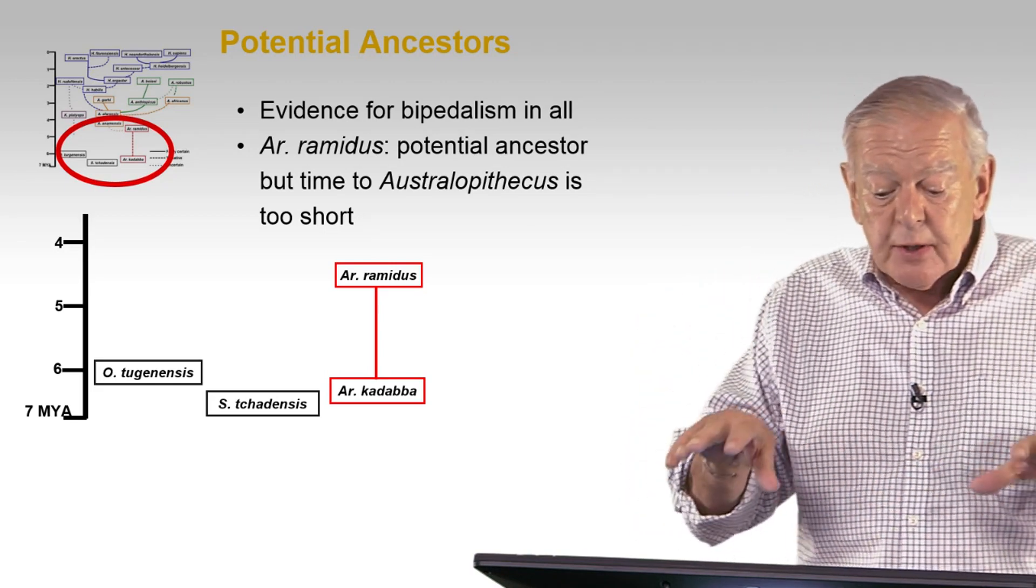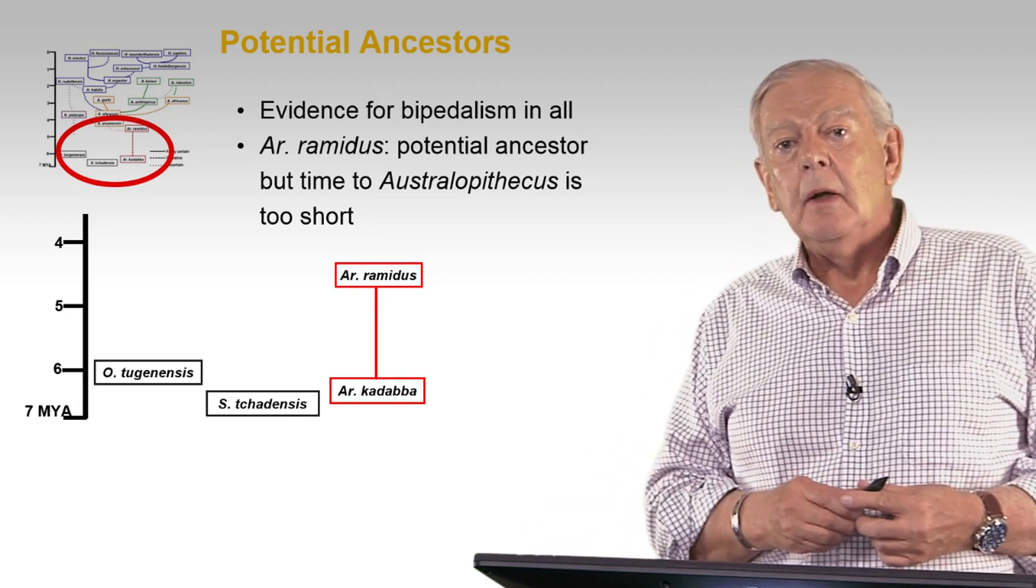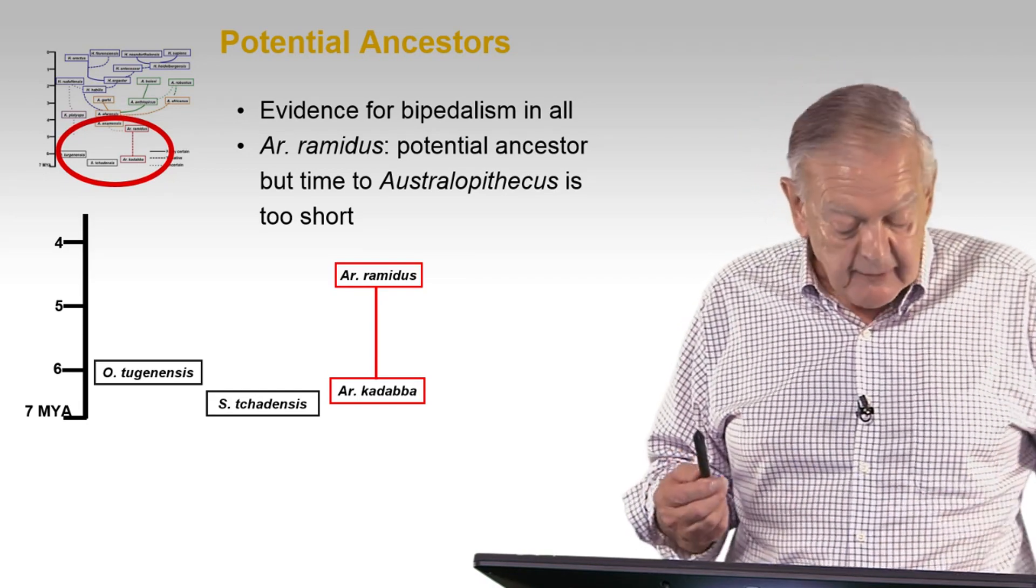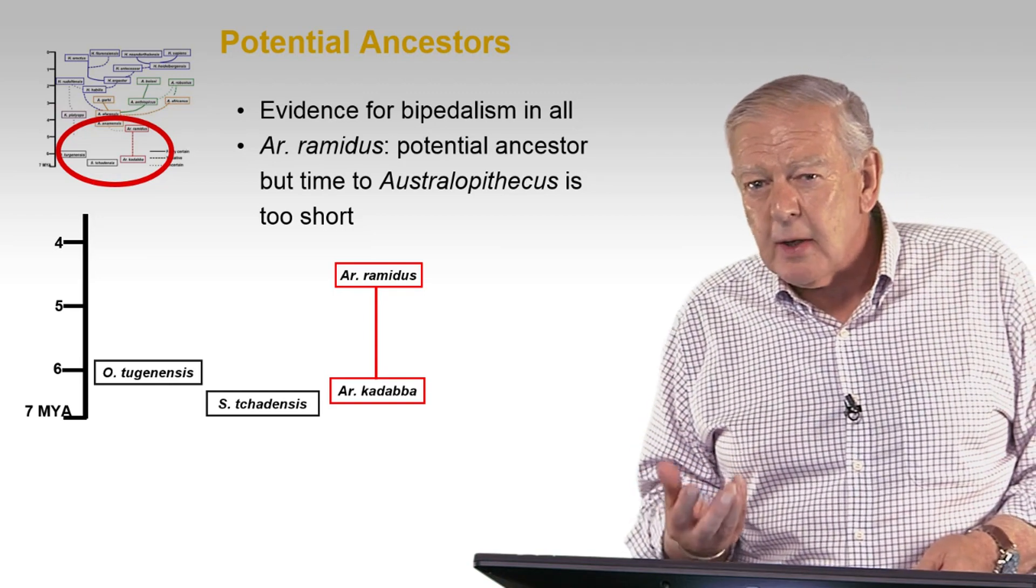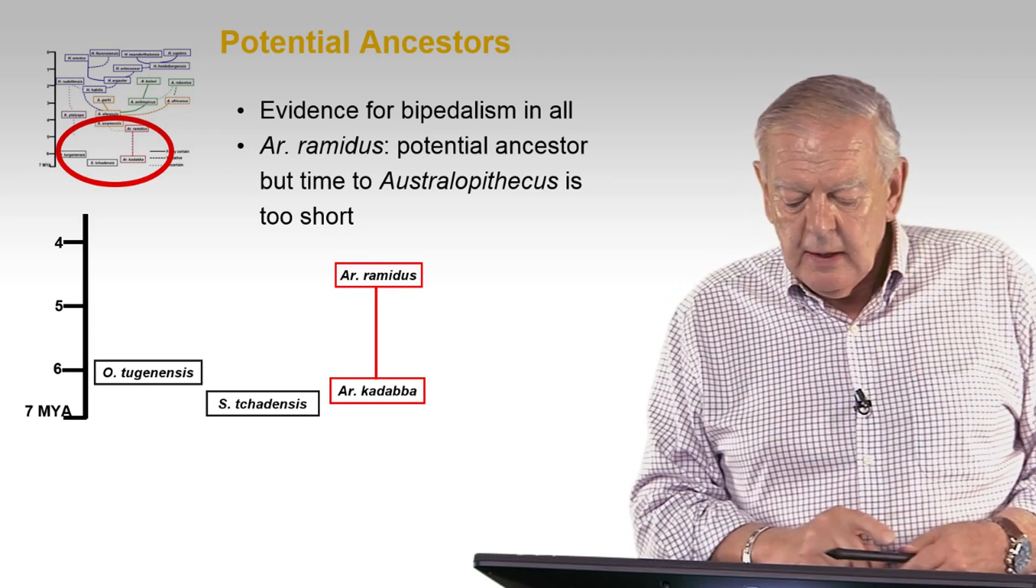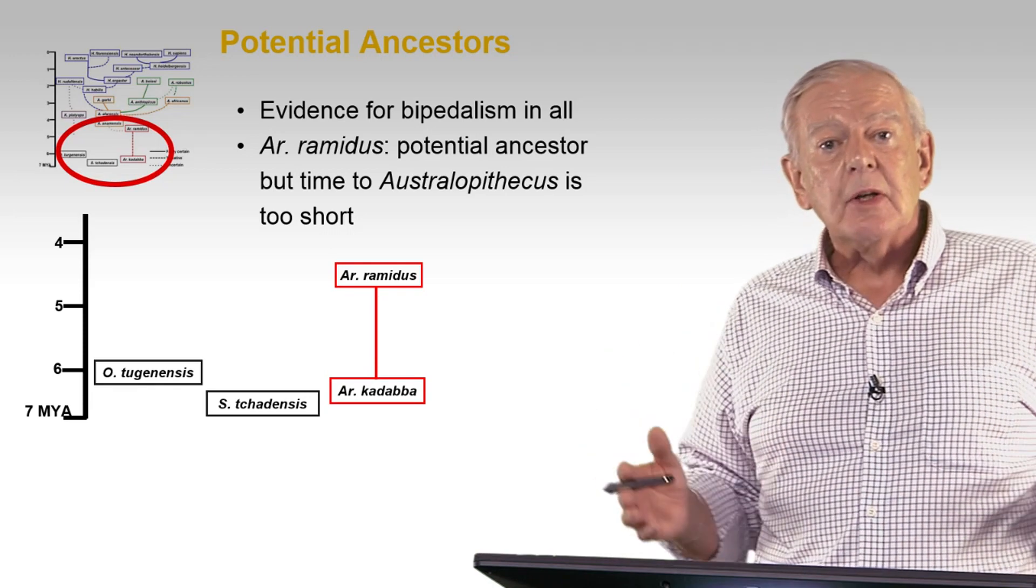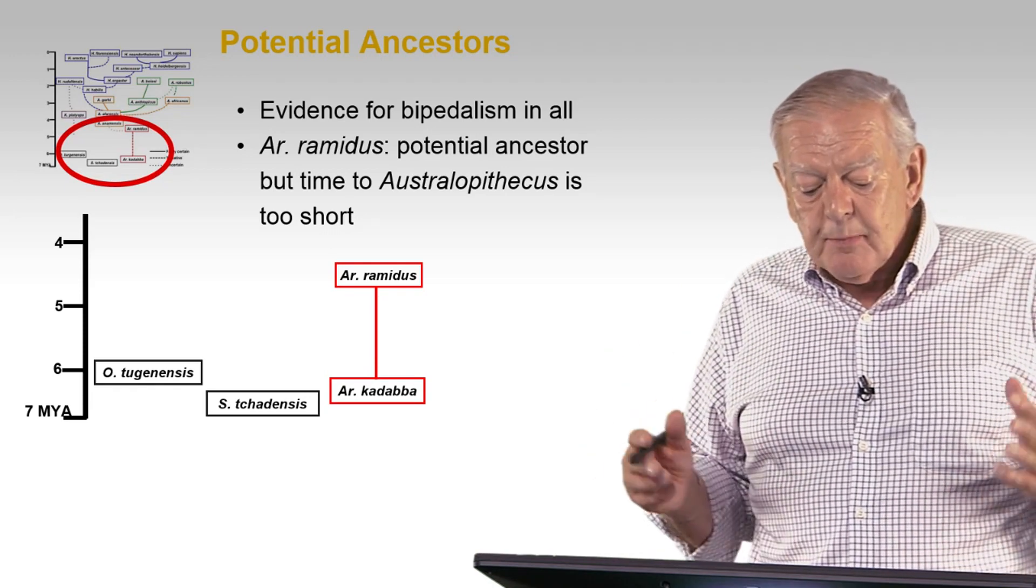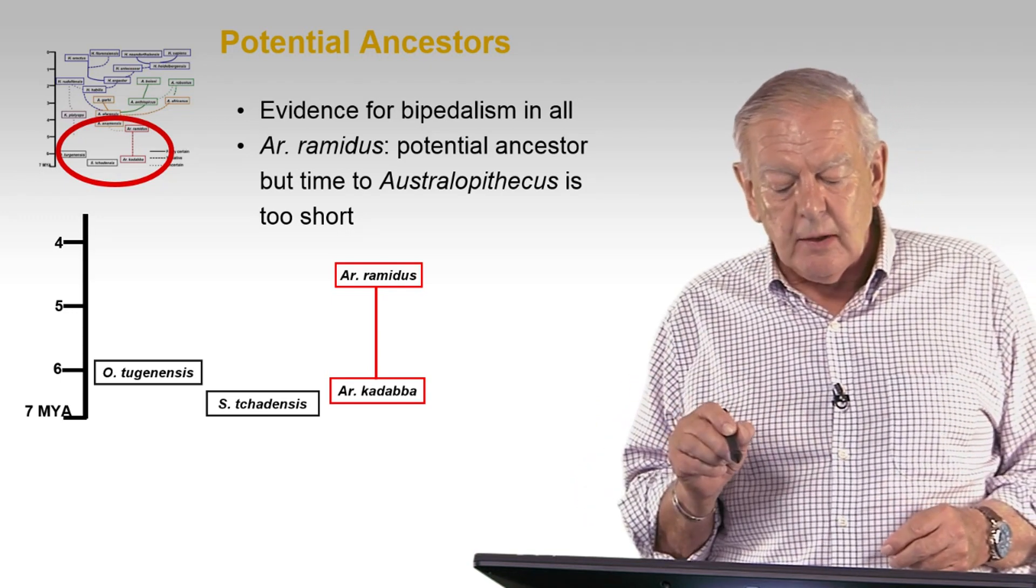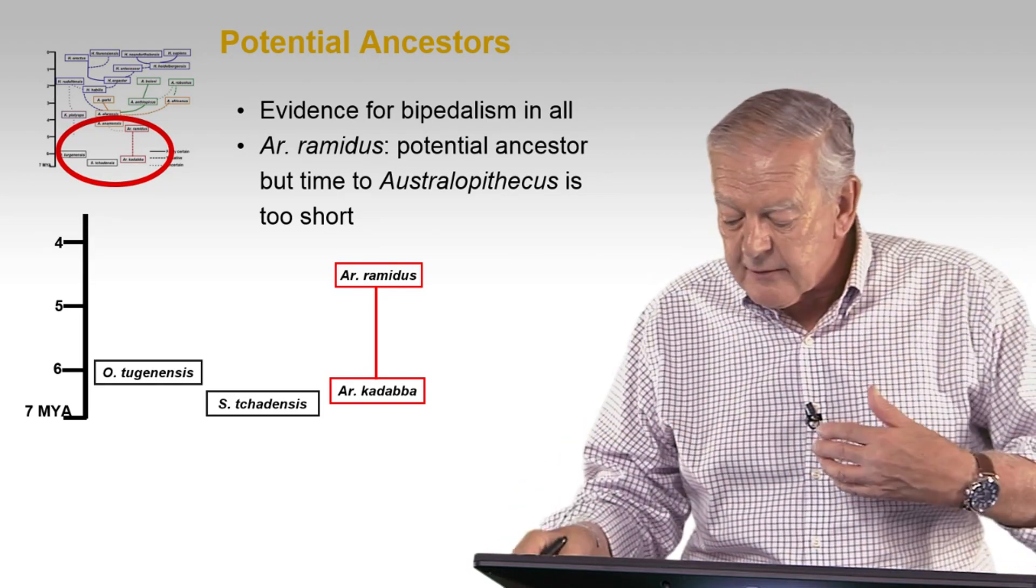At the pre-Australopithecus, we have a number of potential ancestors. We have Touganensis in Kenya, which walked upright based on the femurs, Chadensis, which may have walked upright based on the foramen magnum. We have Cadaba with that one toe bone, and we have Ramidus or Arti, as it is sometimes called, which has pretty much of a skeleton. Was it perhaps an ancestor to later things? We stressed early on that the time between Ardipithecus ramidus and Australopithecus was too short for all the transformations to happen.